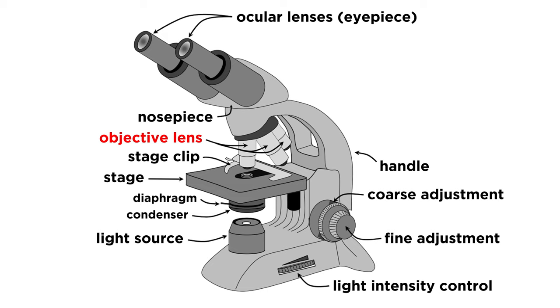Above the stage are the objectives that are held by the nosepiece, which can be rotated so that different objective magnifications may be employed to view the specimen. The tube of the microscope connects the nosepiece to the eyepiece, which further magnifies the image and is the part one looks through to view the specimen.